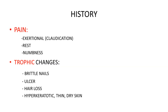The most important presenting feature of ischemia is pain. Pain due to arterial insufficiency is characteristically claudication pain, meaning it occurs with exertion. In severe cases, pain may be present at rest, and in cases of ischemic neuritis, paresthesia, numbness, and abnormal sensations may be present. Trophic changes such as brittle nails, trophic ulcers, hair loss, and hyperkeratotic dry skin indicate a severe form of ischemia.